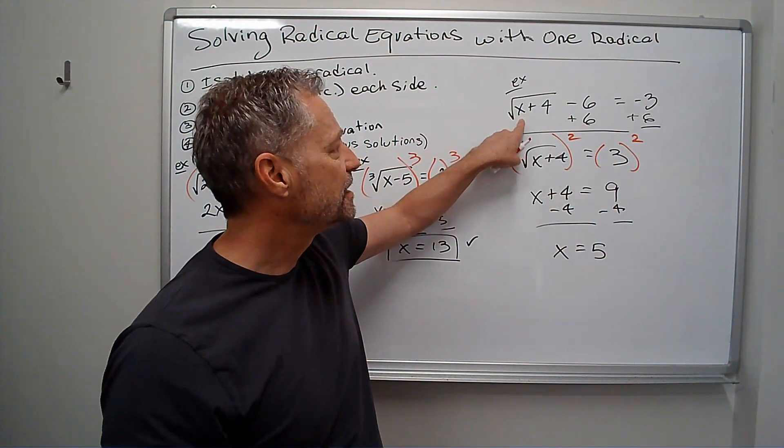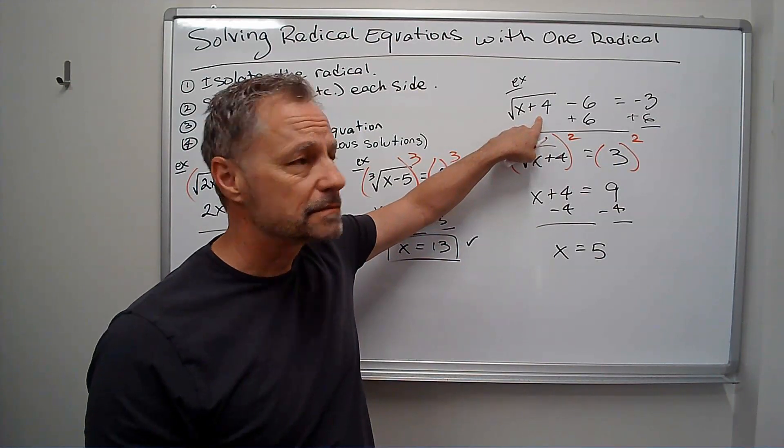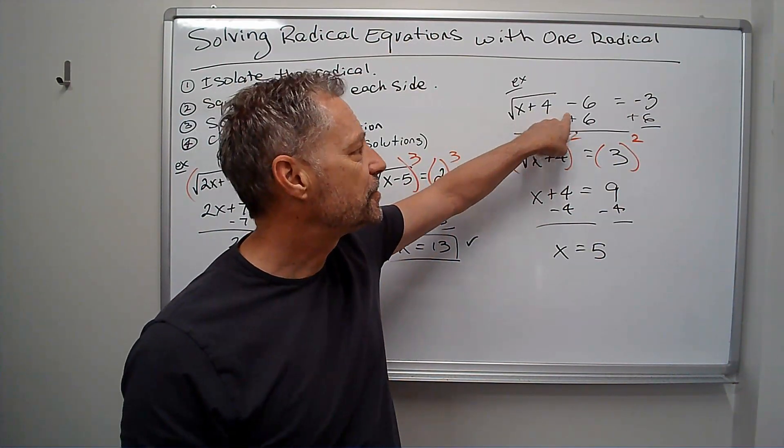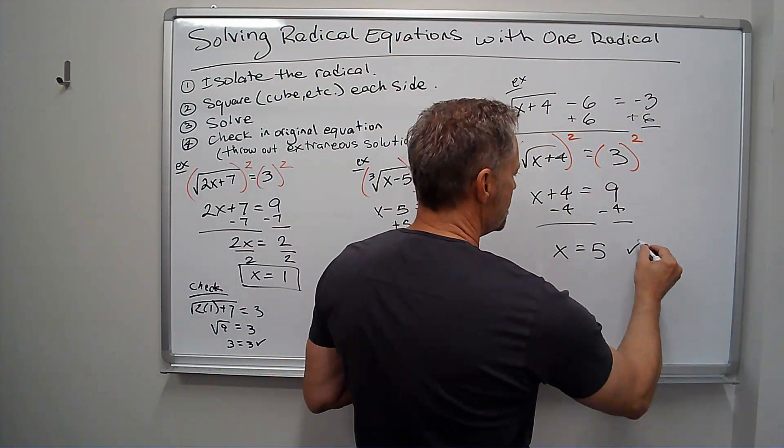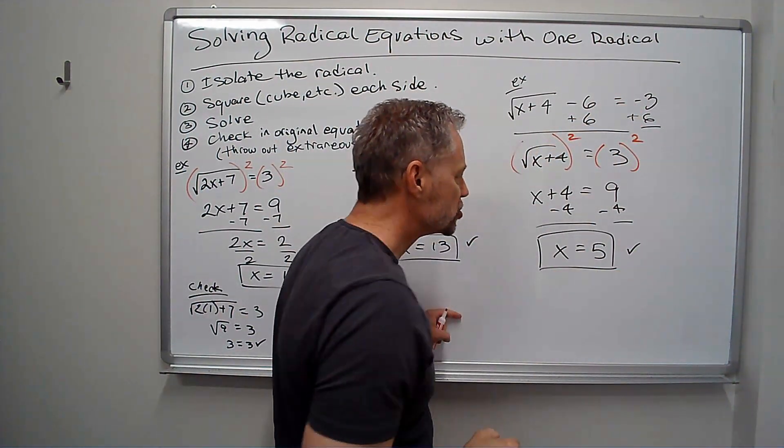Again, I'm going to check. 5 plus 4 is 9. The square root of 9 is 3. 3 minus 6 is negative 3. It does check.